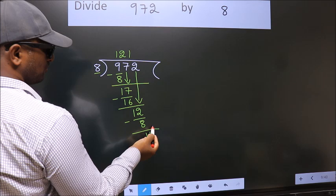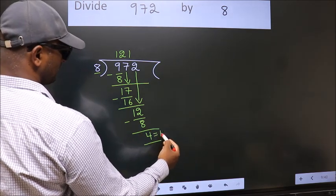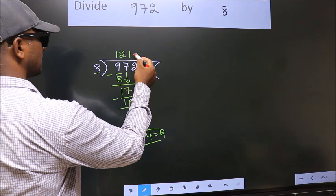No more numbers to bring it down. So, we stop here. This is our remainder. This is our quotient.